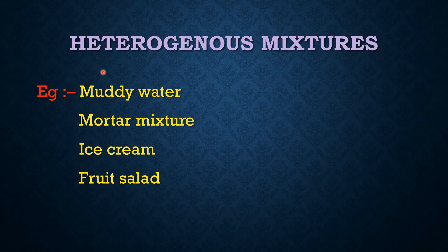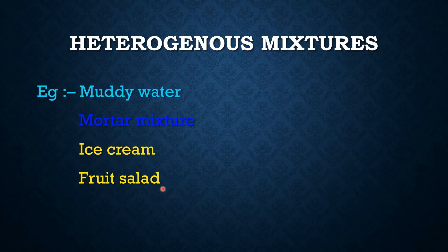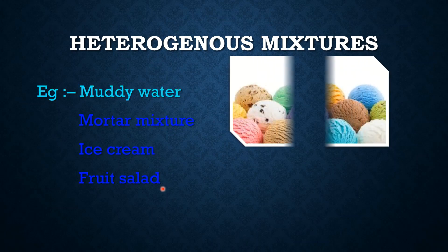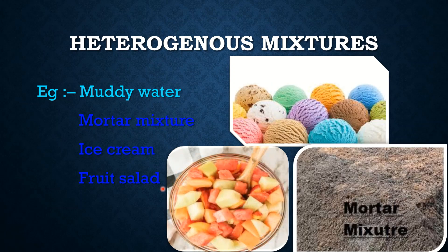Next, we discuss heterogeneous mixtures. Mixtures in which the composition is not uniform throughout are known as heterogeneous mixtures. Examples include muddy water, water and oil mixture, ice cream, and food salad, as seen in the pictures.